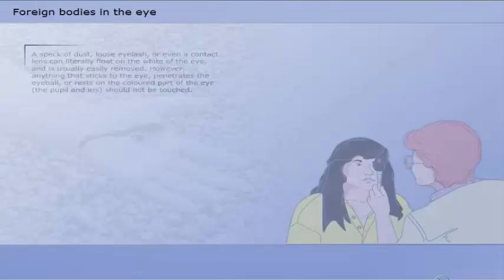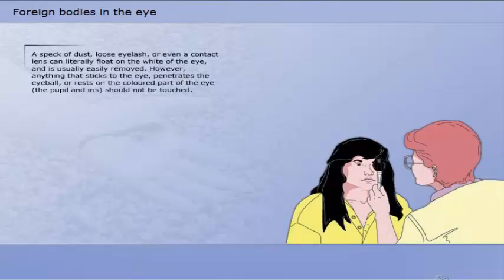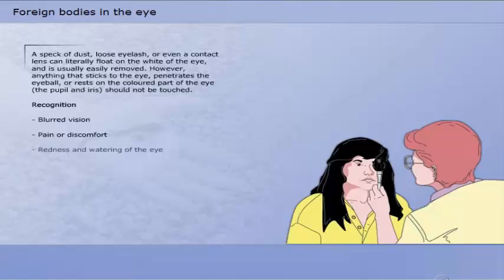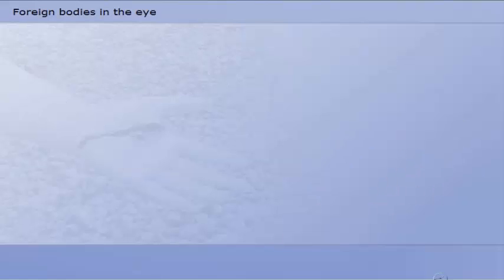A speck of dust, loose eyelash, or even a contact lens can literally float on the white of the eye and is usually easily removed. However, anything that sticks to the eye, penetrates the eyeball, or rests on the coloured part of the eye should not be touched. Symptoms include blurred vision, pain or discomfort, redness and watering of the eye, and eyelids screwed up in spasm.